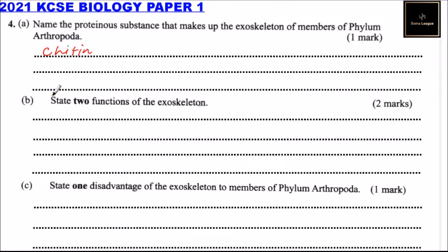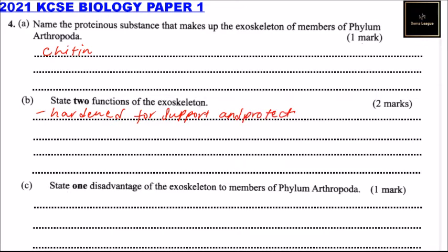Part B: State two functions of the exoskeleton. One function is that it is hardened for support, and it also protects delicate tissues.